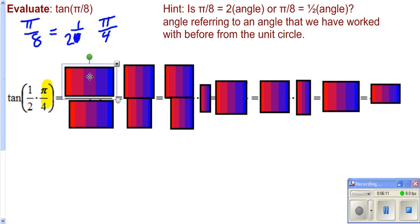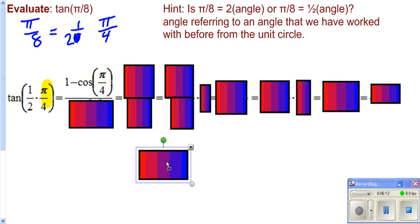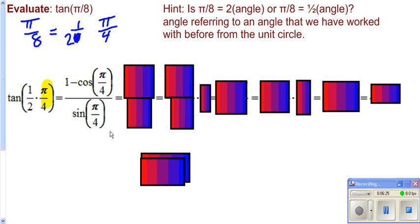So we're going to use our formula for tangent of half u, of which there's a couple of them. I'm choosing to use the one that says one minus the cosine of u. Use your angle you're dealing with, pi over four, over the sine of u, which would be sine of pi over four. You know the cosine and sine both of pi over four, so you can plug those in and then it's just a matter of simplifying.